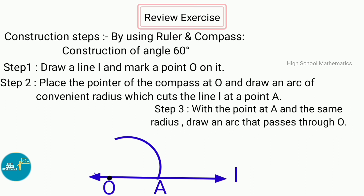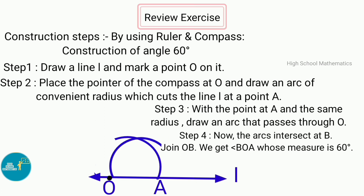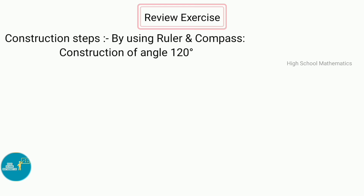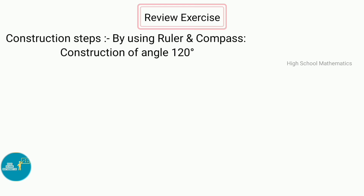Step 3 — with the pointer at A and the same radius, draw an arc that passes through O. Step 4 — the two arcs intersect at B. Join OB. We get angle BOA whose measure is 60 degrees. Now, construction of angle 120 degrees using ruler and compass.